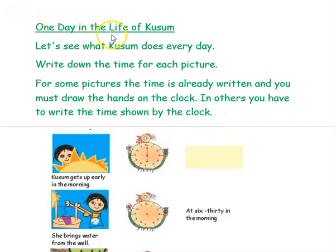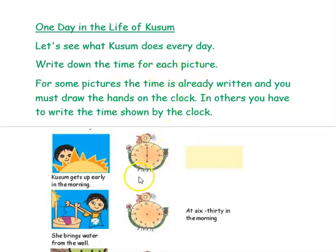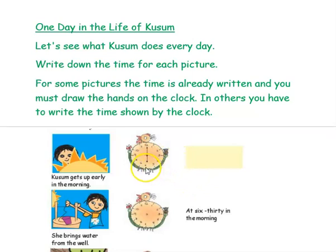One day in the life of Kusum starts with the day by getting up early in the morning till she goes to bed. The activity is planned and given here. We have to write down the time for each picture. For some pictures, time is already written, so we have to draw hands for the clock based on the time given. For others, when the clock shows the time, we have to write what time is shown on the clock.